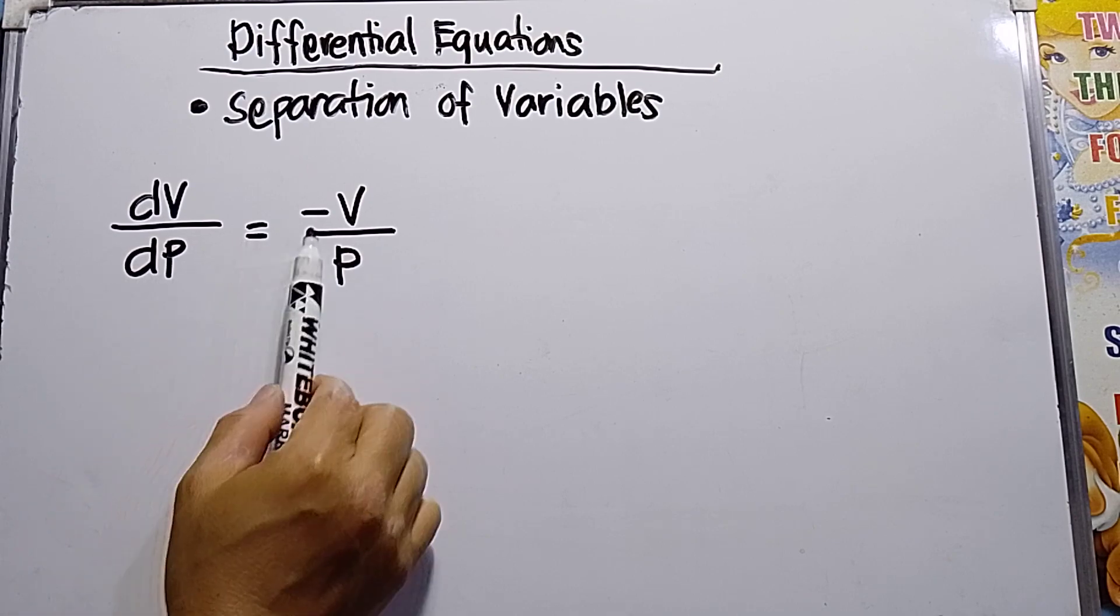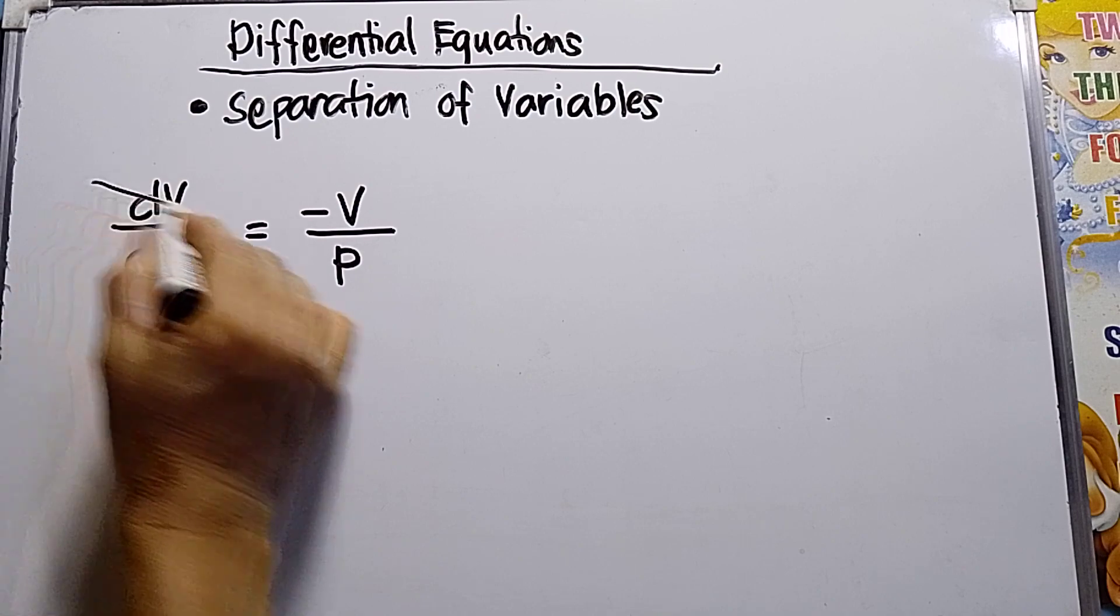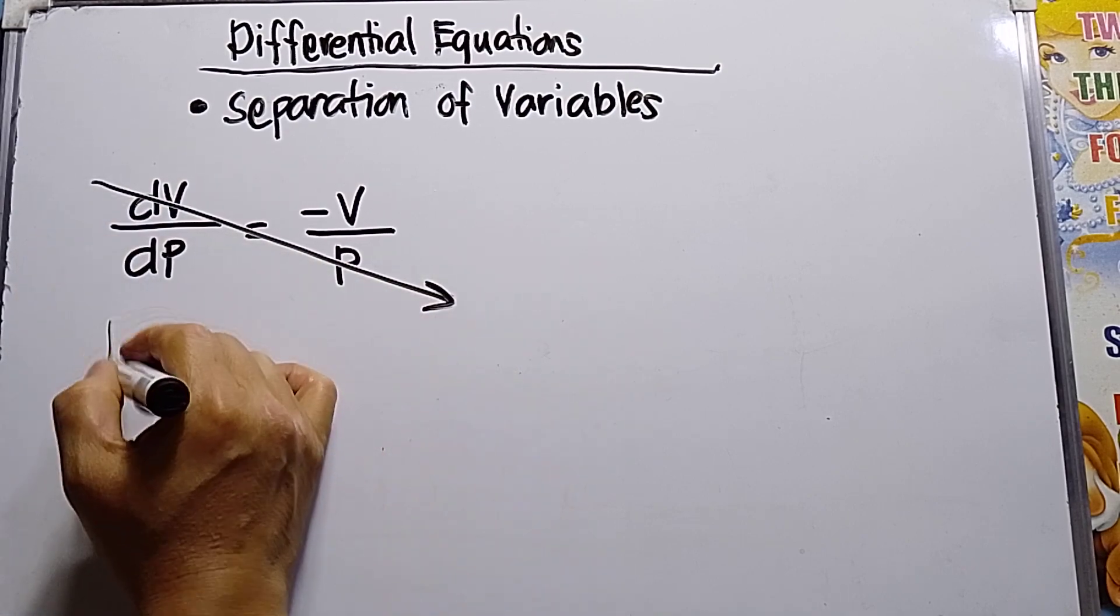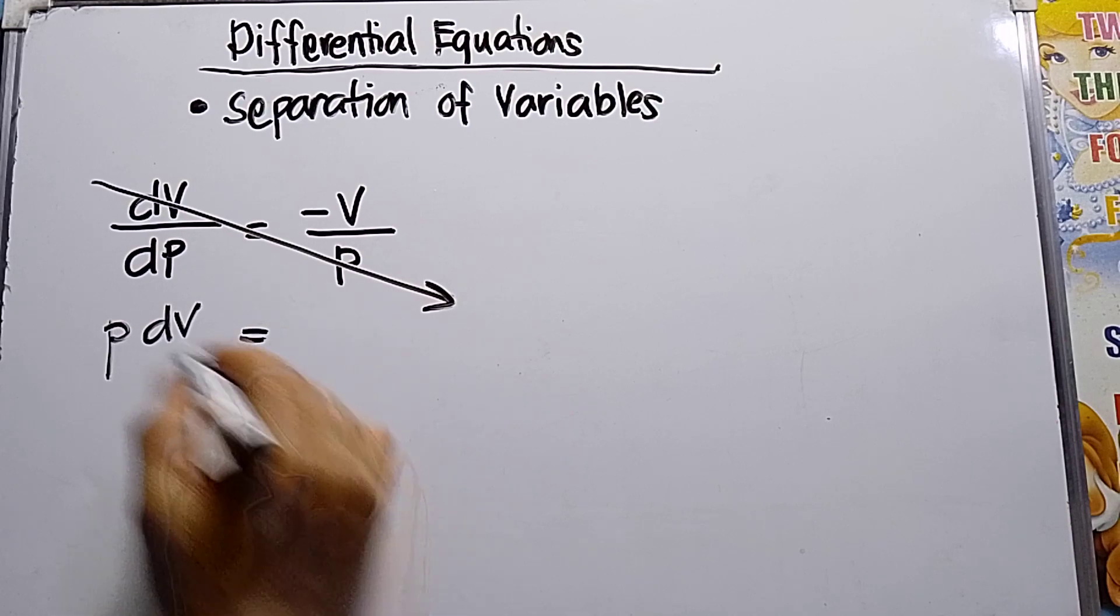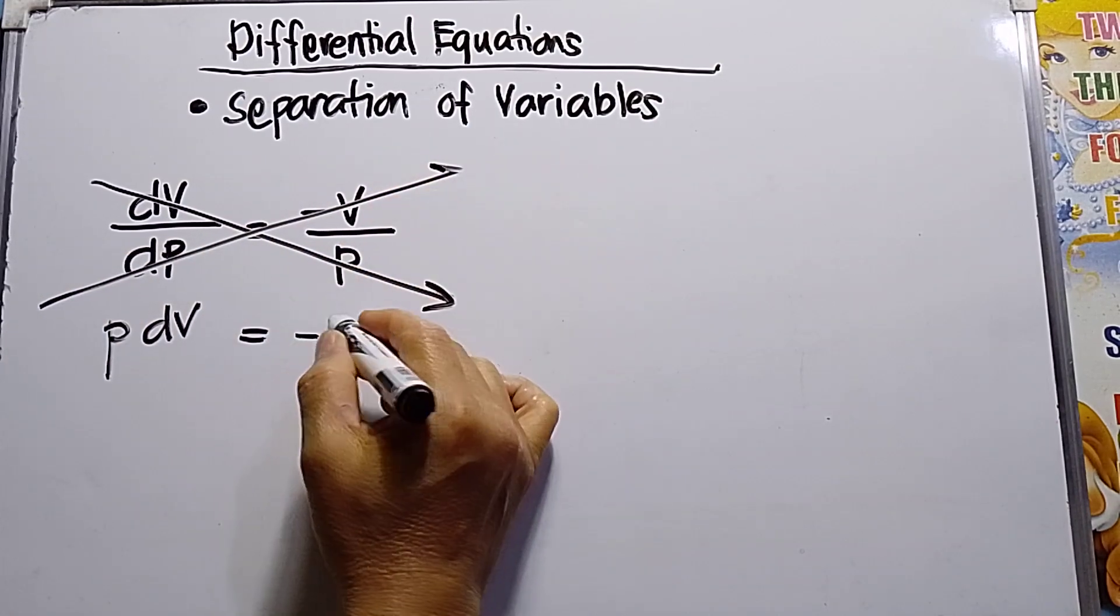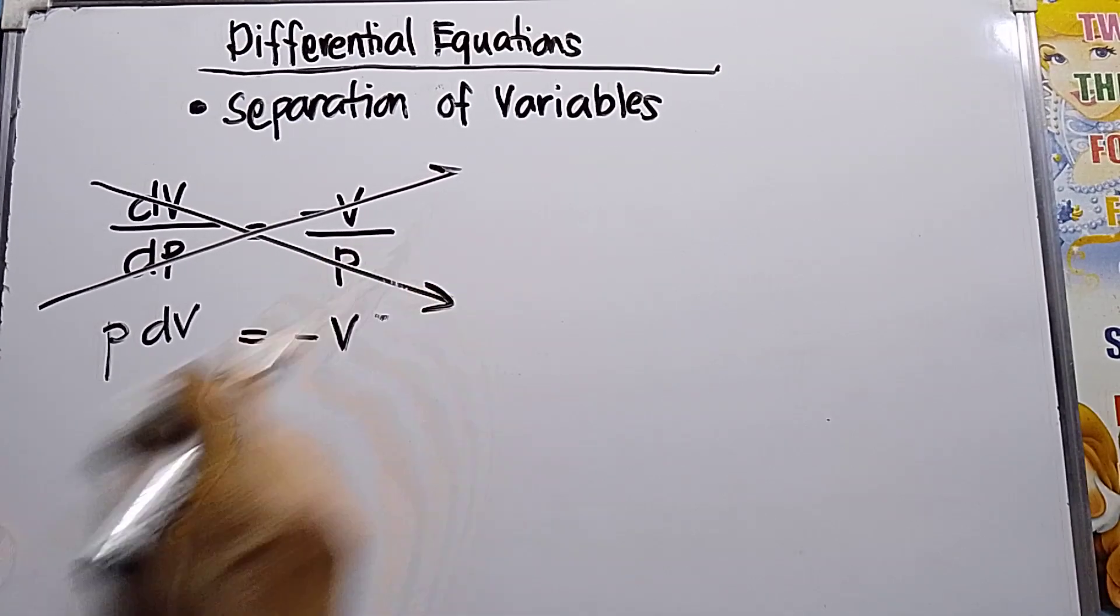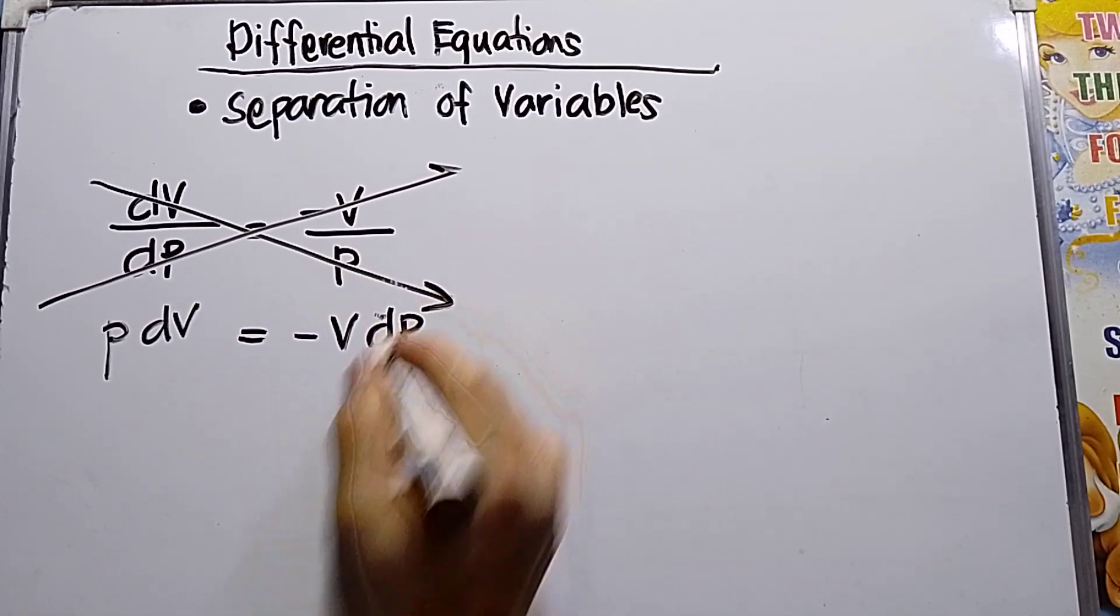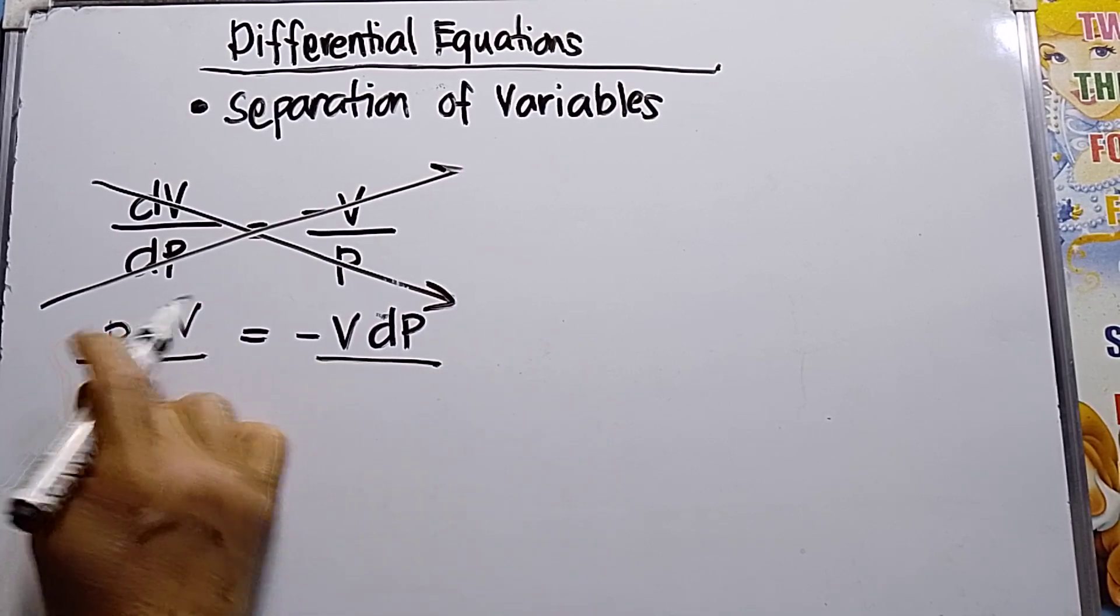So first thing to do is I need to cross multiply. P dV is equal to minus V dP. So this is dP and divide both sides by P and V.